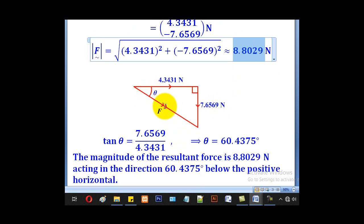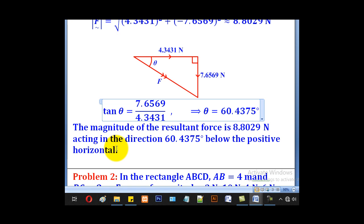For the direction, we have to get this angle using opposite over adjacent. tan θ equals 7.6569 divided by 4.3431, giving us θ as 60.475 degrees. After getting the magnitude and direction, we conclude that the magnitude of the resultant force is 8.8029 newtons, acting in the direction 60.435 degrees below the horizontal.